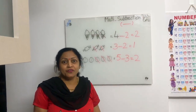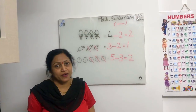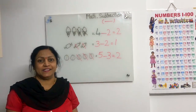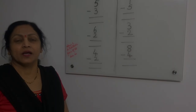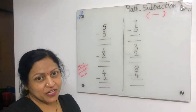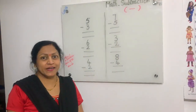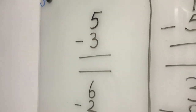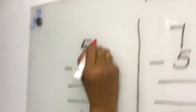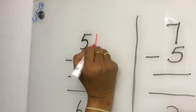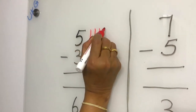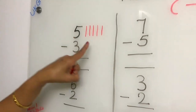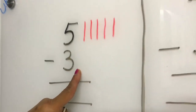Now I will tell you subtraction with numbers. Okay children, ready? Please bring your books, pencil and eraser. I am explaining subtraction with numbers. See here — what is the first number? This is five. We have to put five small standing lines: one, two, three, four, five. In this five, we have to take out three.